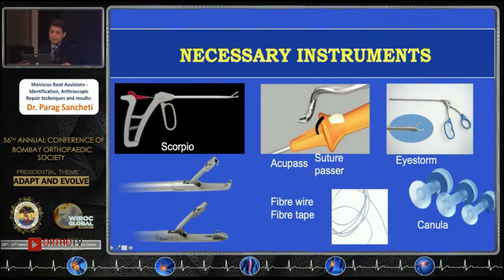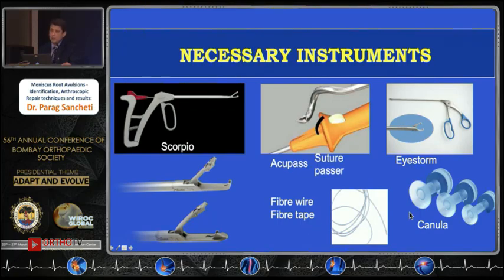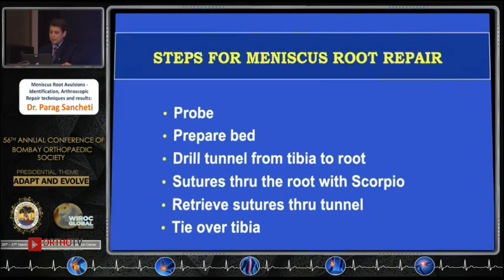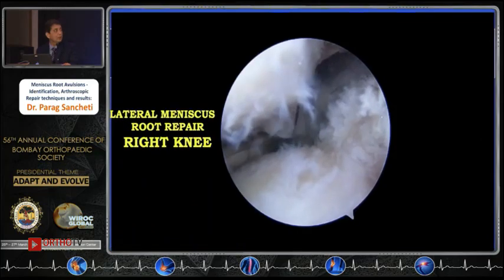You should always have a Scorpio device. I prefer the Scorpio over the AcuPass from AcuFex because it's just one bite, two bites and you get it done. You also need FiberWire, FiberTape, and a cannula — I'll explain why in a moment. The various steps are: probing, preparing, passing sutures, retrieving them, and tying at the tibia — and I'll take you through these steps in the video.